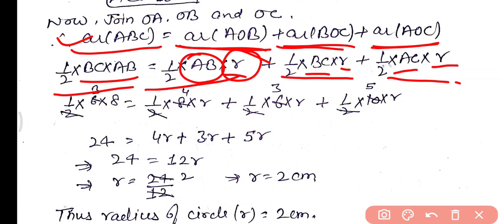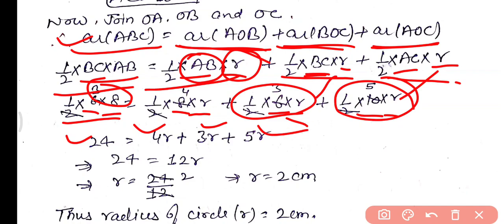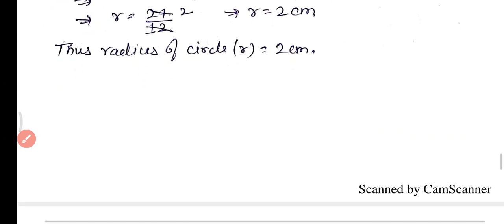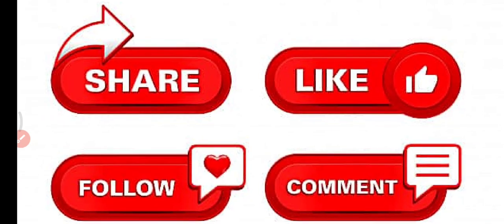Substituting all values: area of ABC equals 1/2 times 6 times 8 equals 24. Right side: 1/2 times 8 times r, plus 1/2 times 6 times r, plus 1/2 times 10 times r equals 4r plus 3r plus 5r equals 12r. So 12r equals 24, giving r equals 2 cm. Thus the radius of the circle is 2 centimeters. This completes question number 3. If you learned from this video, please subscribe to my channel and share this video. Thanks for watching.